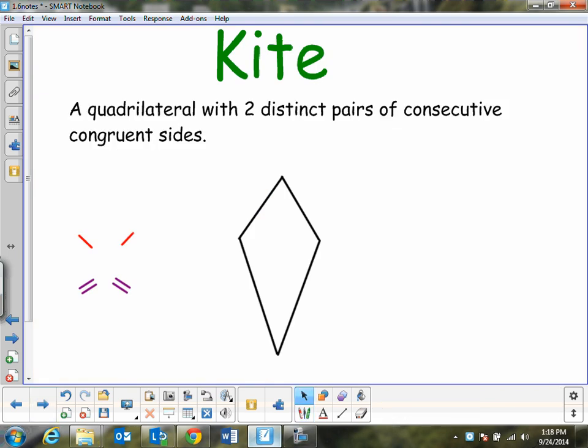The kite is a quadrilateral with two distinct pairs of consecutive congruent sides. So again to be consecutive means right next to each other. So look at that one. This one is right next to each other. So that means two are consecutive and congruent. So these two are consecutive and congruent.